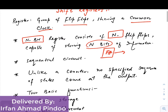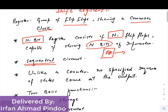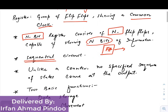A shift register is an example of a sequential circuit, meaning the output is dependent on the previous state of the output as well. An important point to understand is that registers are not like counters — they don't follow any specified sequence.